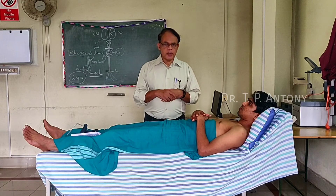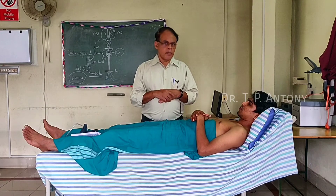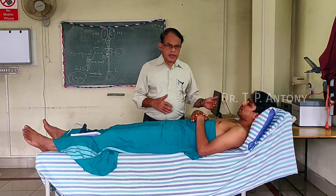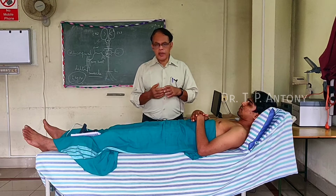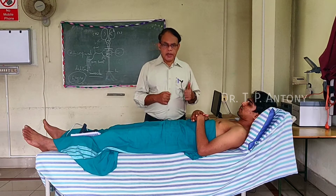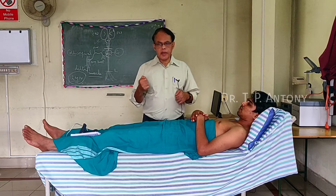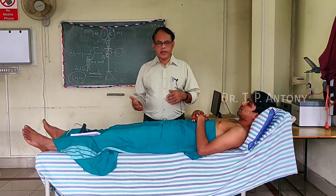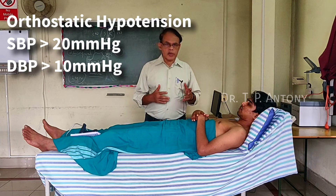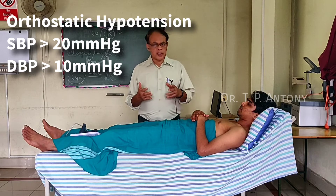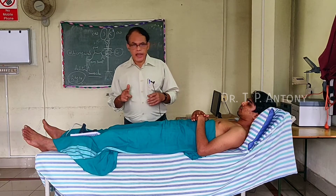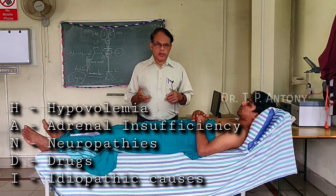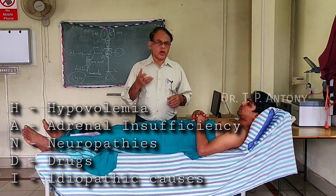In ward patients, blood pressure is commonly taken in the lying down position. If you suspect postural fall, make the patient stand up and record blood pressure within three minutes. If systolic drops more than 20 mmHg and diastolic more than 10 mmHg, it is called orthostatic hypotension. Causes are remembered by 'HANDI': hypovolemia, adrenal insufficiency, different neuropathies, drugs, and idiopathic causes.